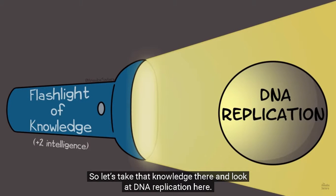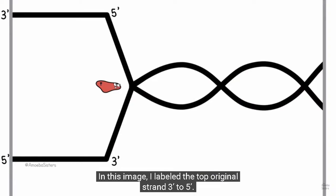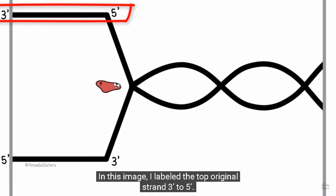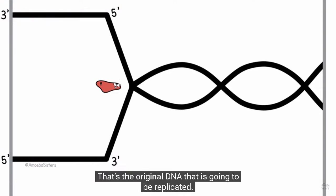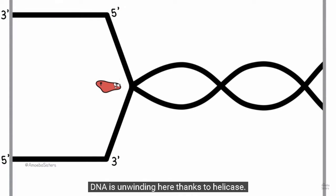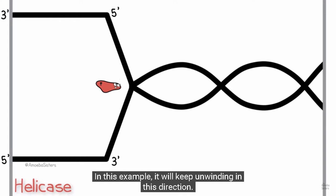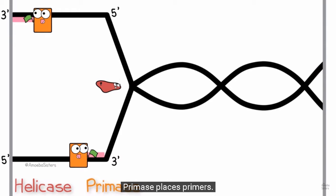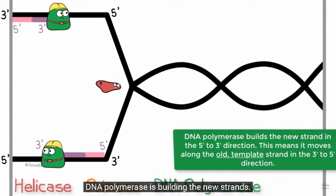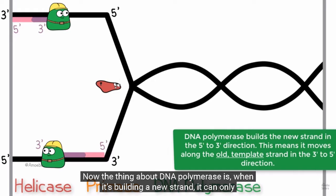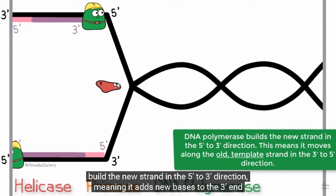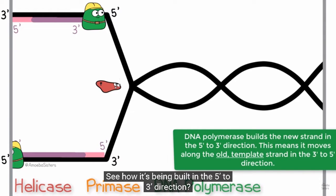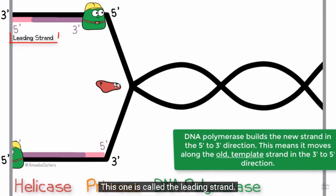Let's take that knowledge and look at DNA replication. The top original strand is labeled 3' to 5', and the bottom original strand is labeled 5' to 3' — that's the original DNA to be replicated. The DNA is unwinding thanks to helicase. Primase places primers, and DNA polymerase builds the new strands. The thing about DNA polymerase is that when building a new strand, it can only build in the 5' to 3' direction, meaning it adds new bases to the 3' end. This one is called the leading strand.